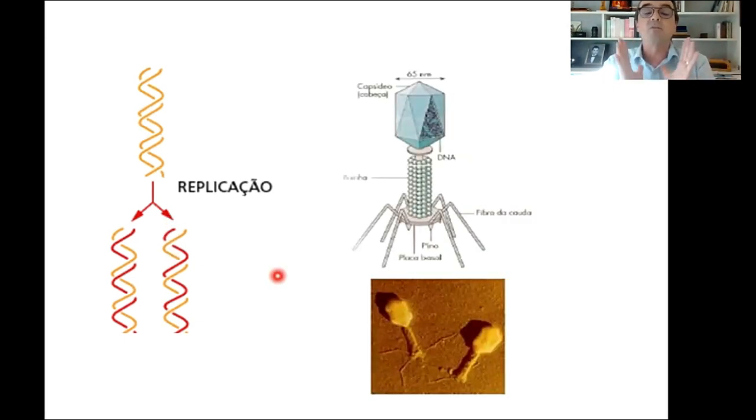E aí nós recapitulamos, então, a estrutura do DNA, da dupla hélice de DNA, essa estrutura tridimensional, descoberta oficialmente por Watson e Crick em 1953, mas com a participação de muitos outros cientistas. E nós, no próximo vídeo, nós falaremos do RNA, mas agora, para fechar esse vídeo, só lembrar que existem vários vírus que têm o seu material genético feito de DNA dupla fita.